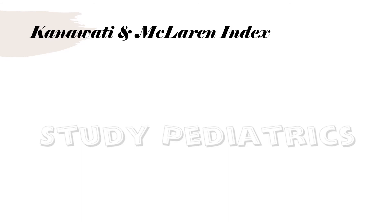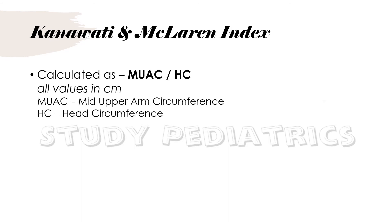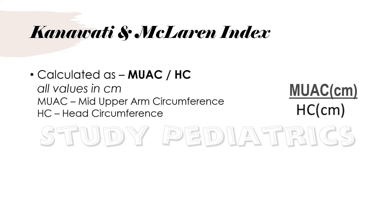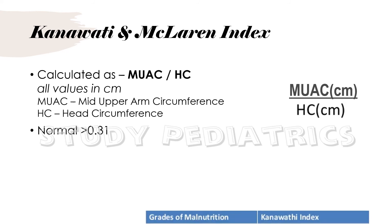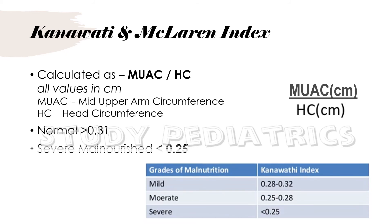Kanawati and McLaren index is calculated as MUAC divided by head circumference. Note that all values are in centimeters only. The normal value is more than 0.31, but in severe malnourishment, the value is less than 0.25.